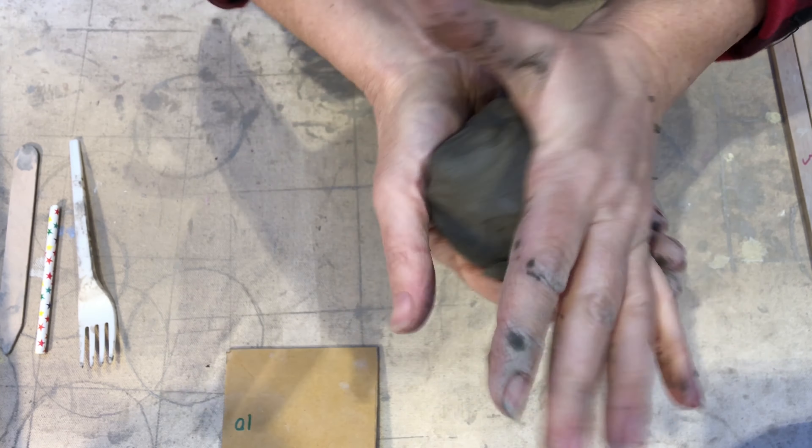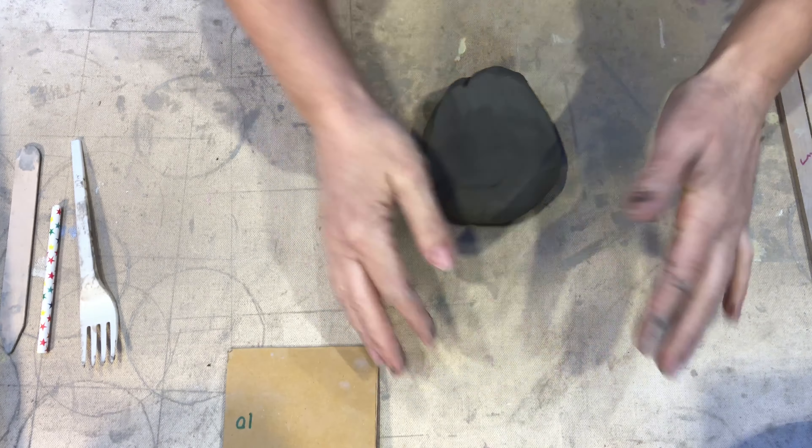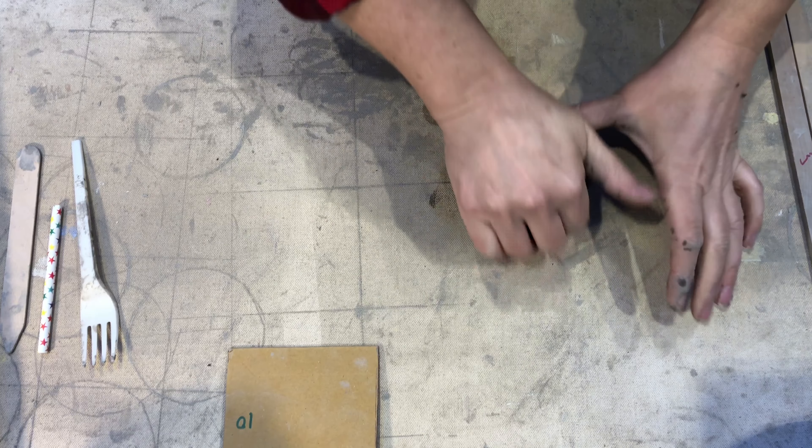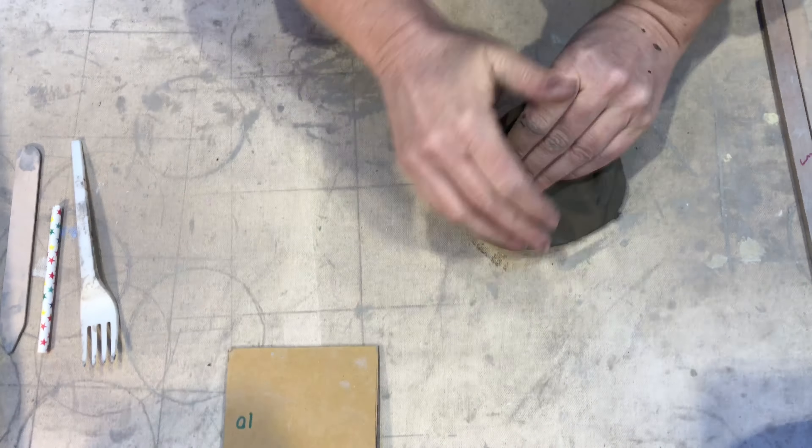So you take your ball of clay and knead it. We need to knead this clay to get the air bubbles out of it, otherwise it'll explode in the kiln later on.